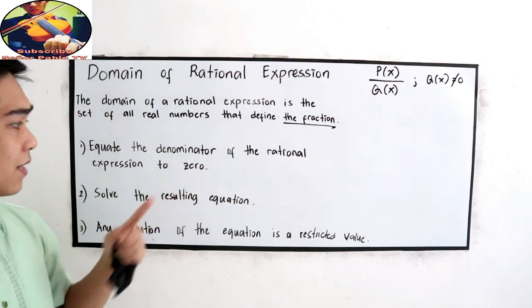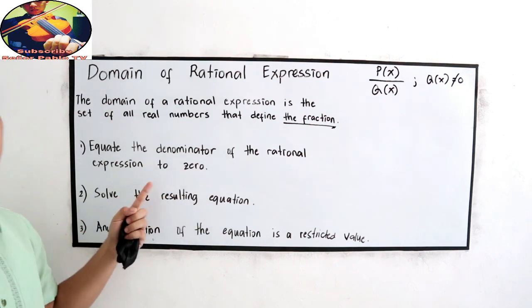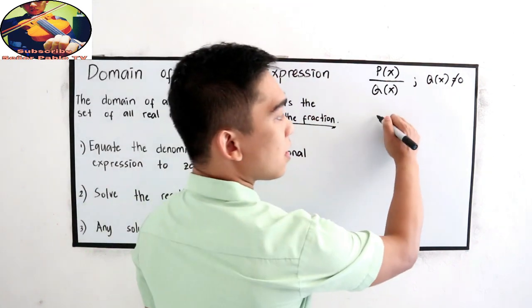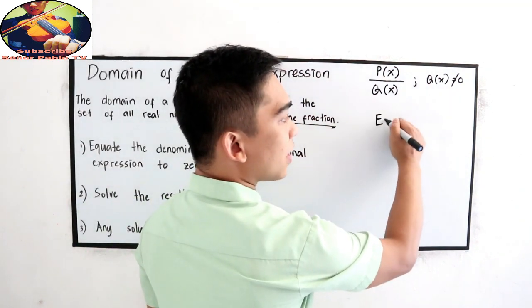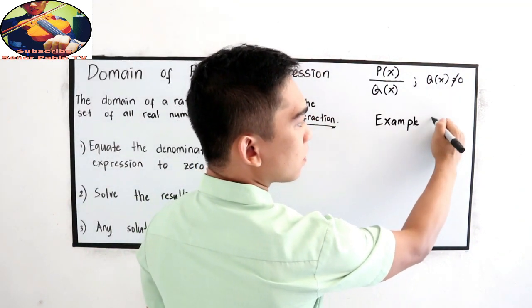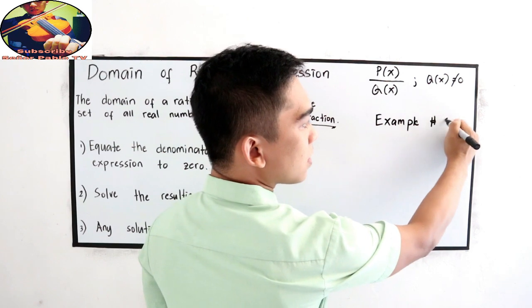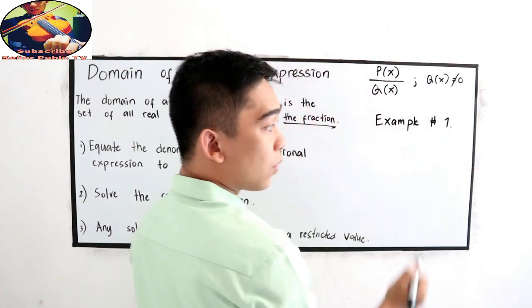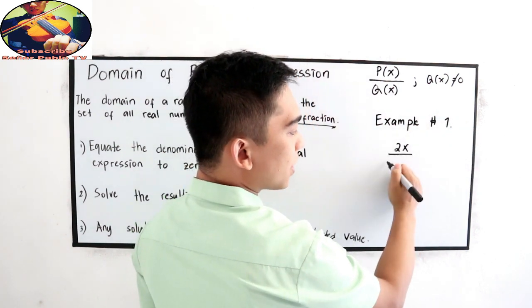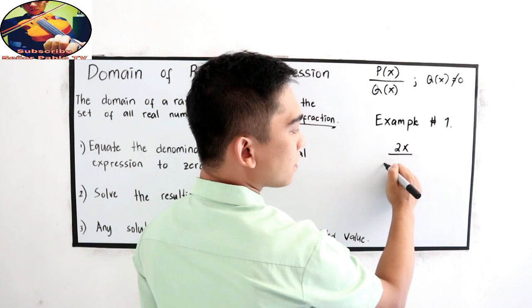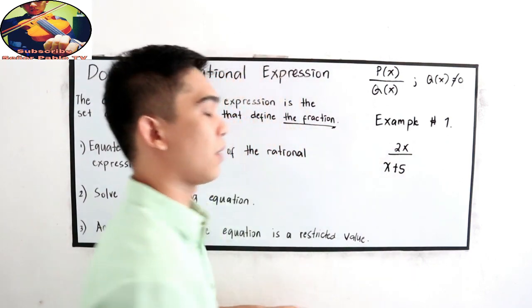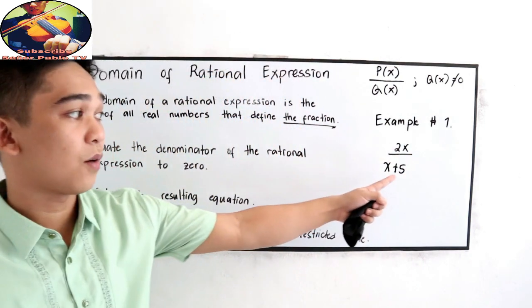Let us apply the steps one by one. For example number one, let's say we have 2X over X plus 5.